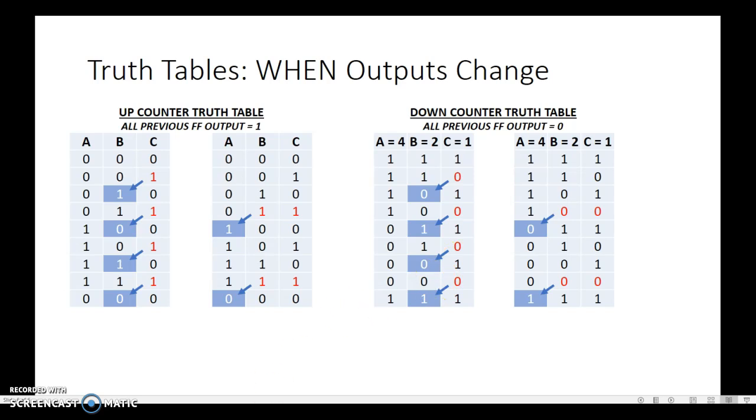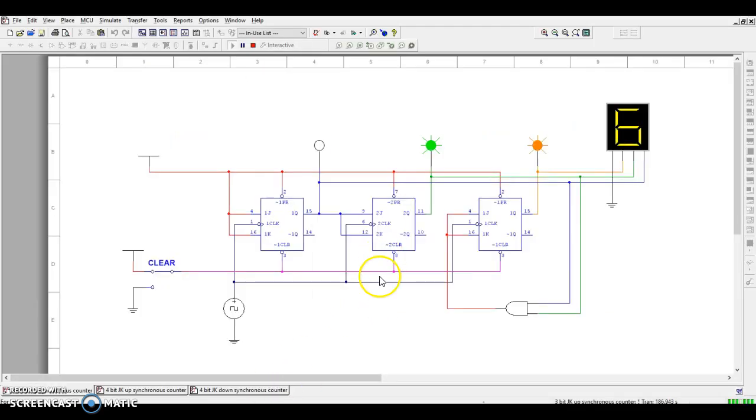So it's very simple to make the change here from a 3-bit up counter that's synchronous to a down counter. All we have to do is instead of looking for Q for this input, I look for Q0. So I'm going to delete this wire. I'm going to run it into Q0 instead.